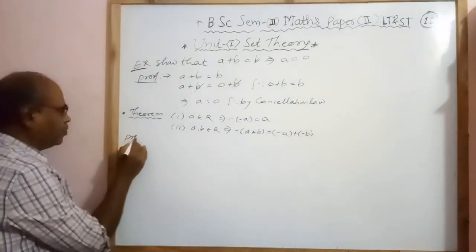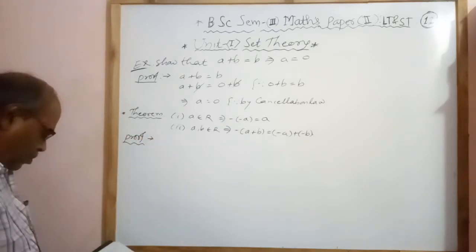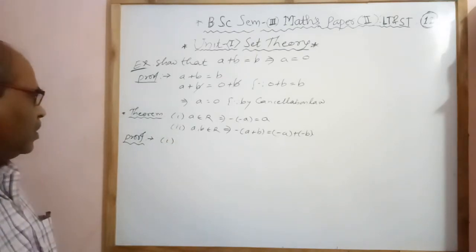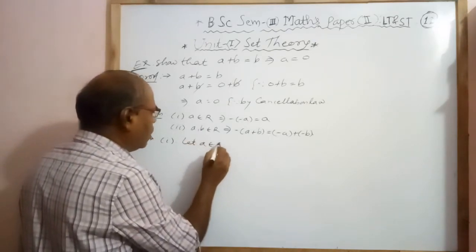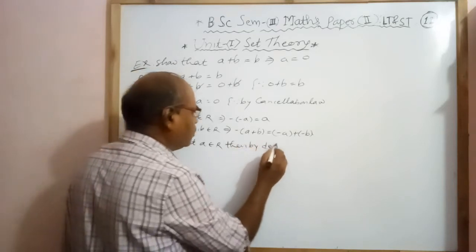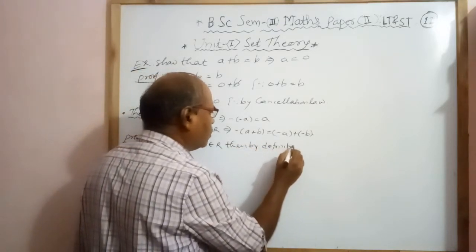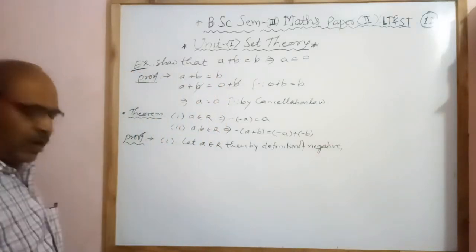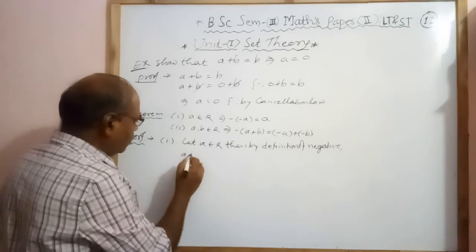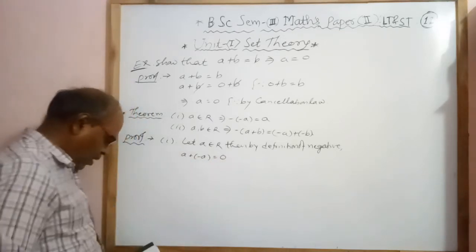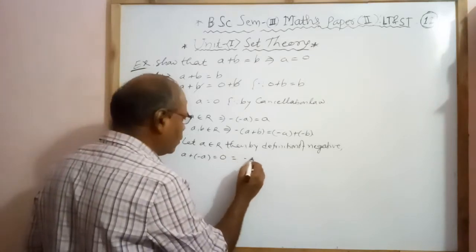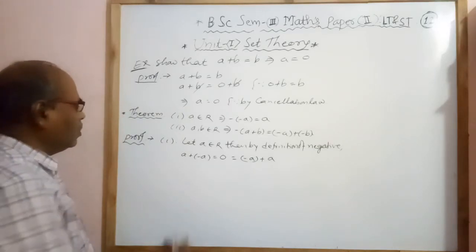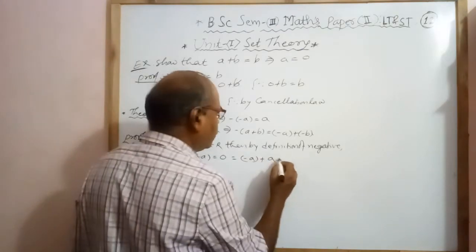Now the proof. For the first theorem: by the definition of the negative, we have A plus minus A equals 0, and we can also write this as minus A plus A equals 0. By the negative property, this shows that the negative of minus A is A.